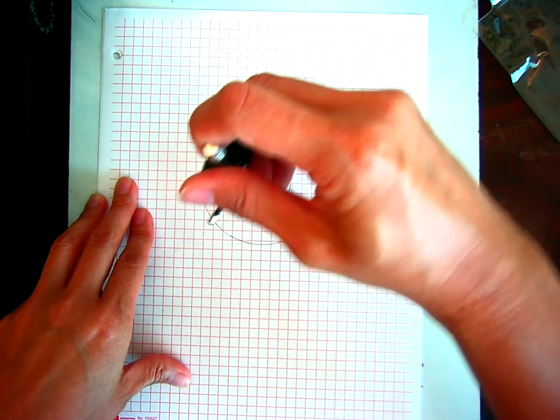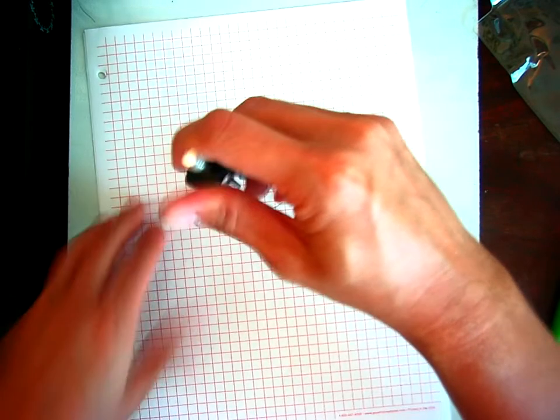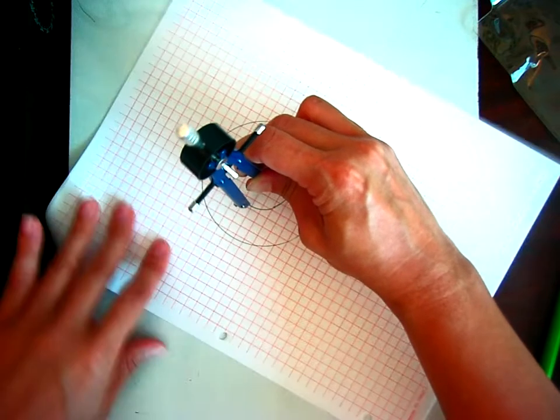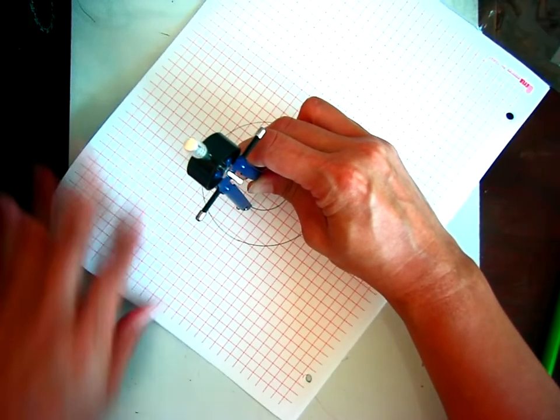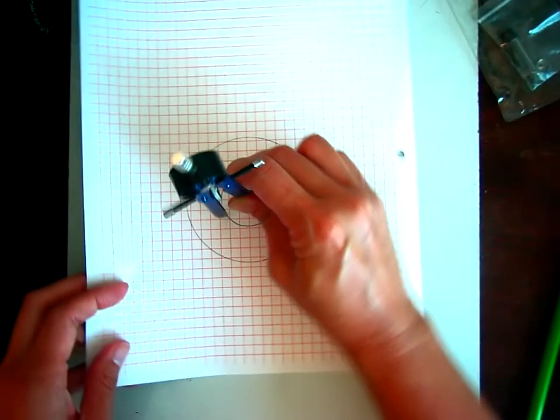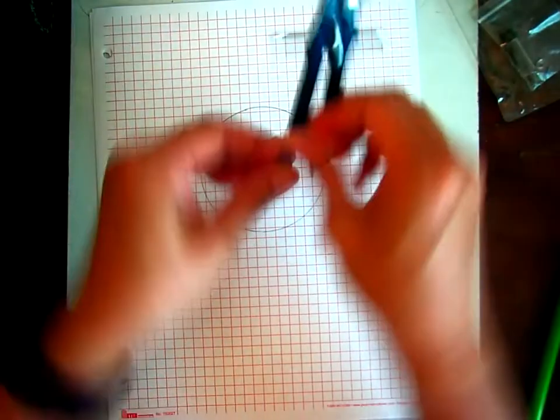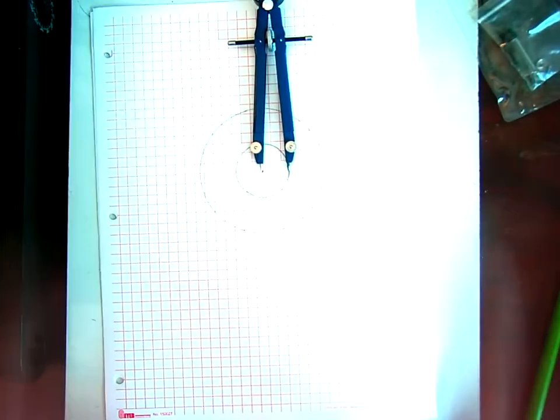Alright, I just lost my needle here. So another thing you can do is hold the needle still and you can spin your paper, which most students like to do. Okay, so there is another circle with a much shorter radius, as you can see.